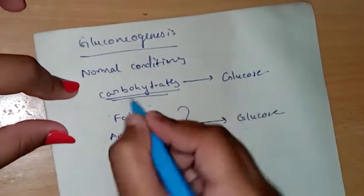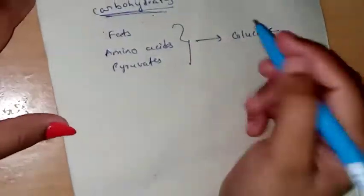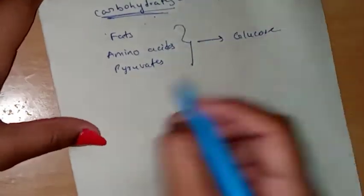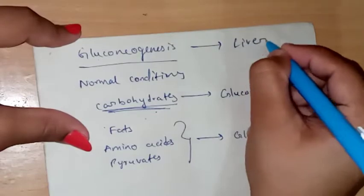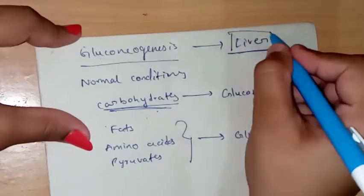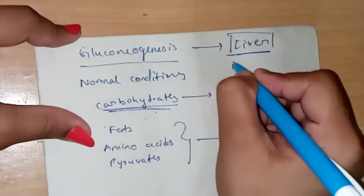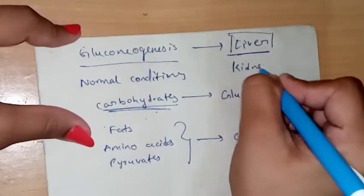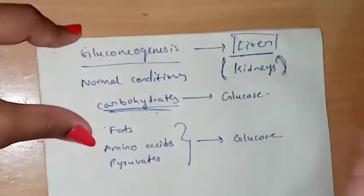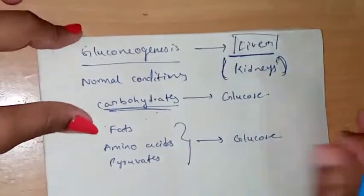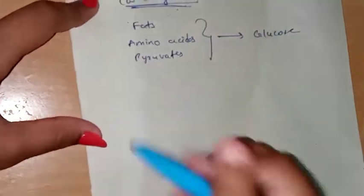This process happens mainly in the liver — the main site is the liver. But sometimes it also happens in the kidneys, to a lesser extent. Most of the process happens in the liver.